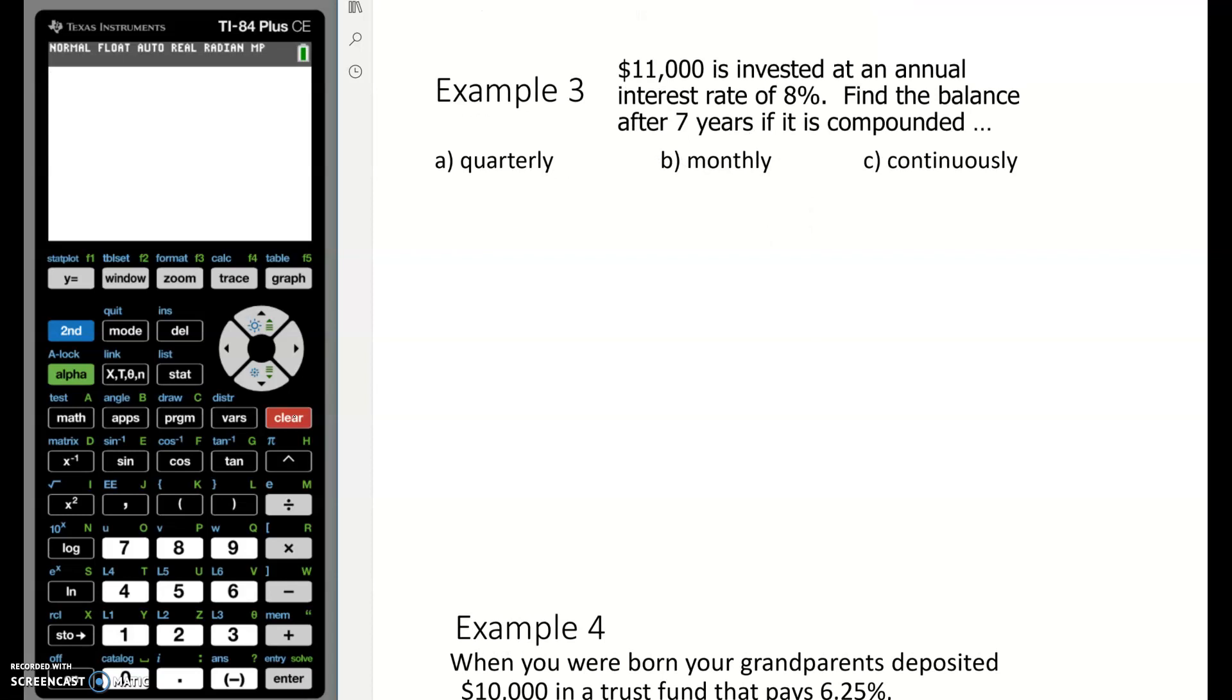$11,000 is invested at an annual interest rate of 8%. $11,000 is our starting amount, that is our P. 8 is our interest rate, that is going to be 0.08. 7 years, that is our T. And then compounded quarterly - for quarterly, N is 4. So here's how this formula would look. Your ending amount is going to be your starting amount, 1 plus your rate divided by how many times per year you're compounding, raised to the NT.